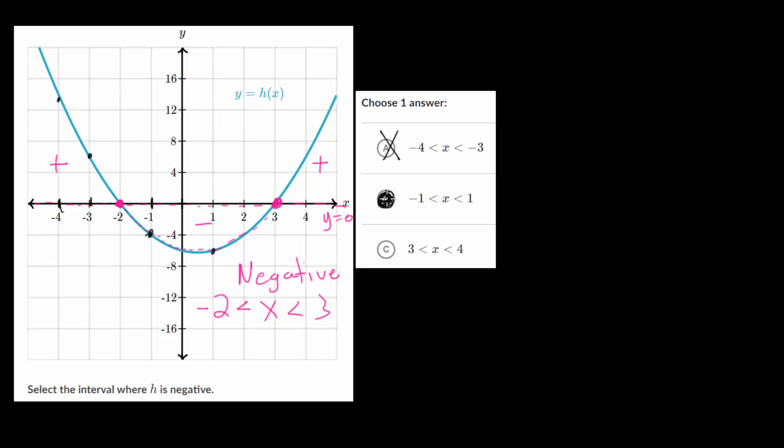So B is the answer we're looking for, but it's always a good habit to check all your multiple choice answers if you have time, just to double check your work. And from 3 to 4, not including 3, so that's going from here to here roughly, this is all positive. So that would not be correct as well, which helps us feel confident that choice B was correct.